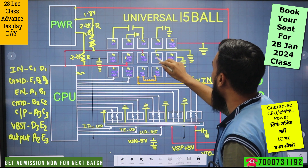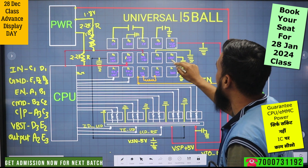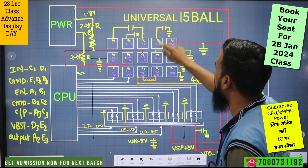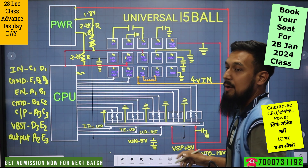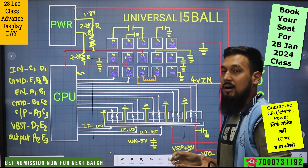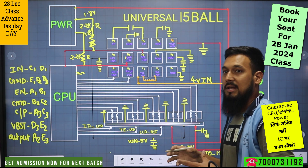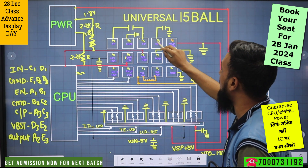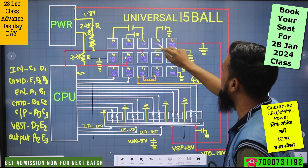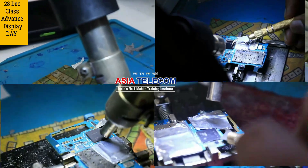Here we are getting VVST and 2VVST which will protect our IC from heating. So here we are getting 2 power points: D3 and...